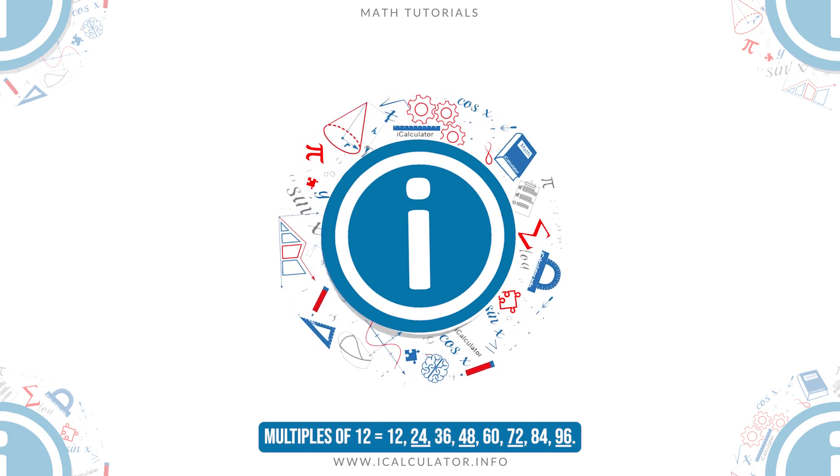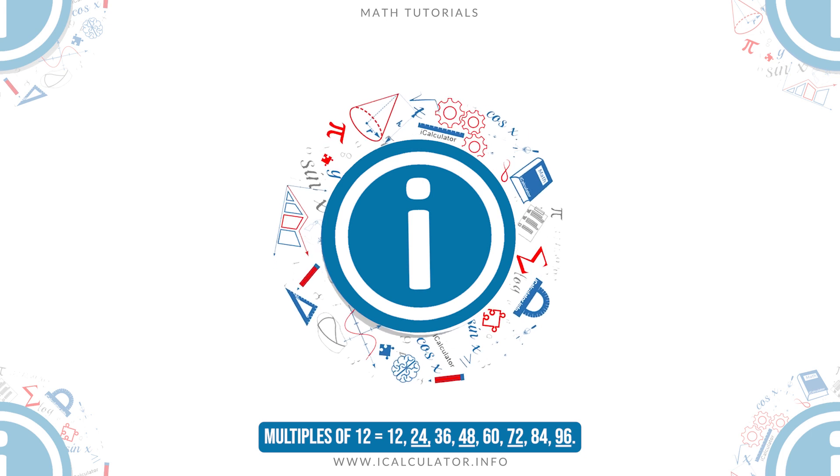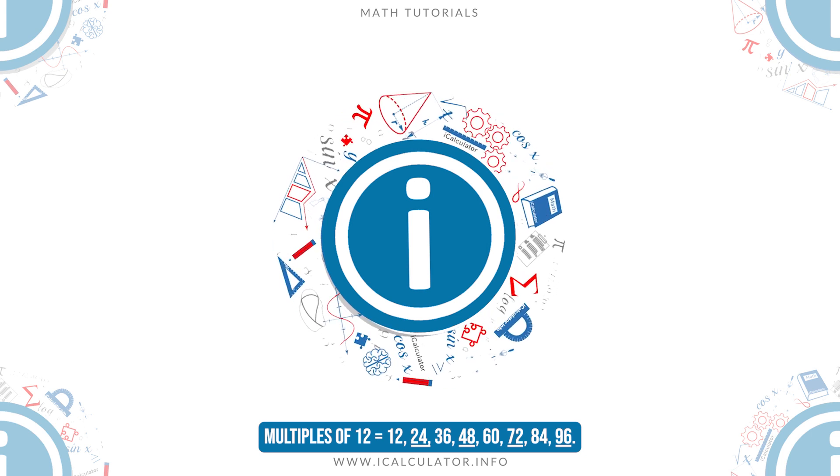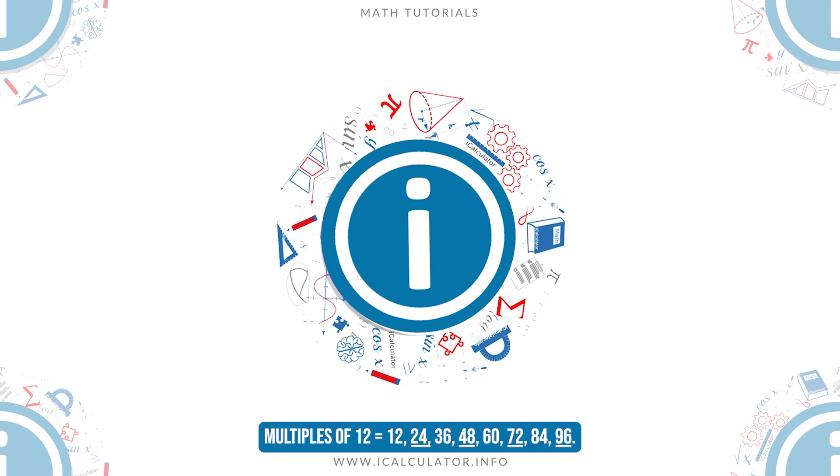Multiples of 12 is equal to 12, 24, 36, 48, 60, 72, 84, 96.